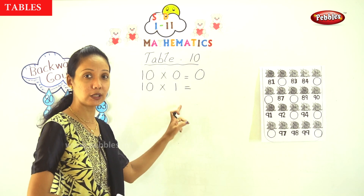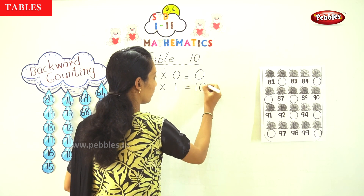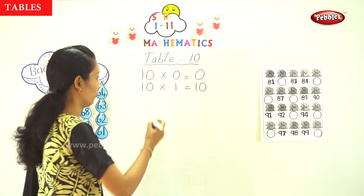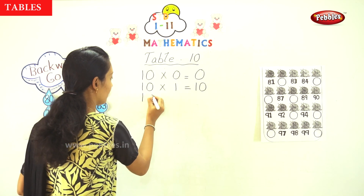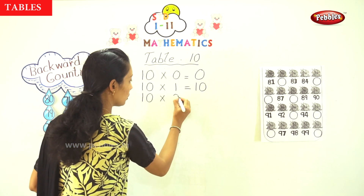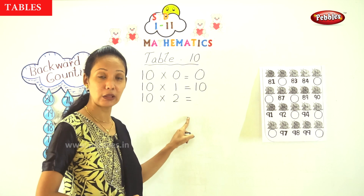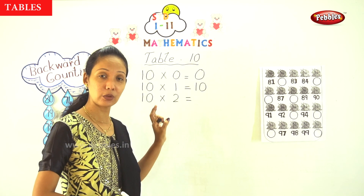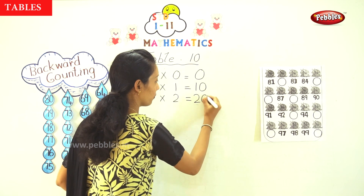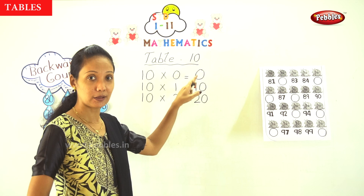10 into 1 is equal to 10. You get 10. Next one: 10 into 2. 10 into 2 is equal to 20. This is even easier — first is 10, then 20.